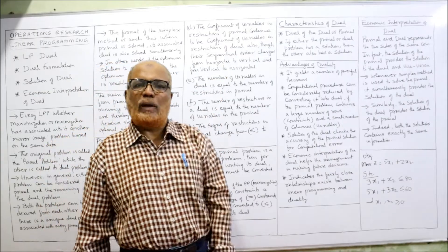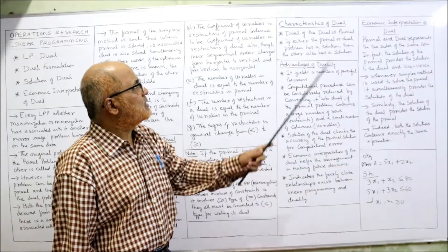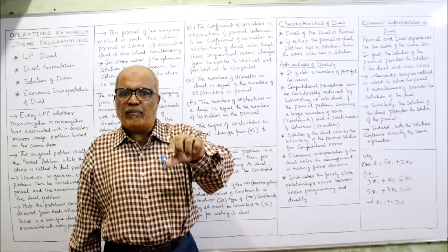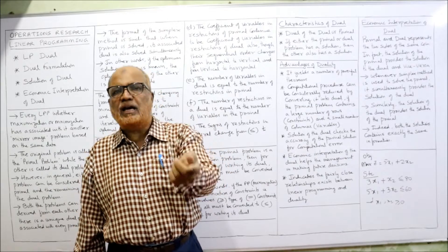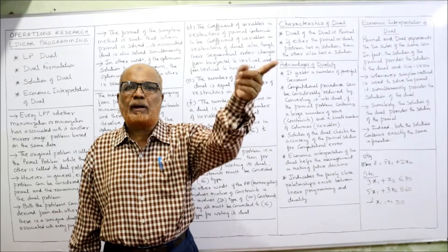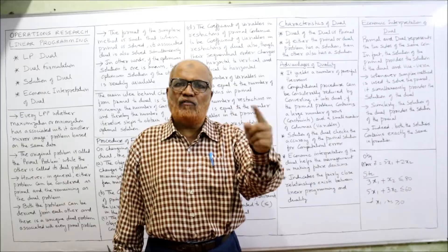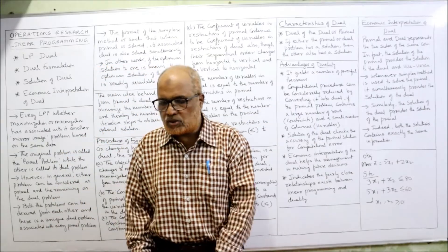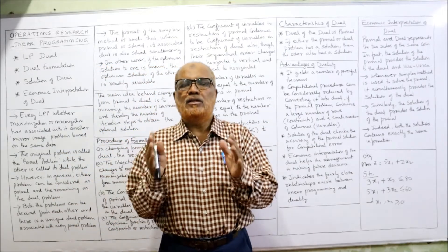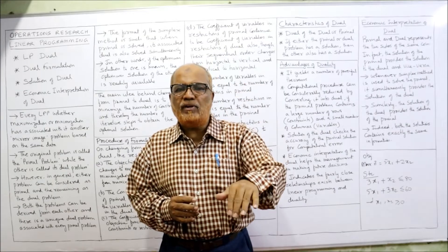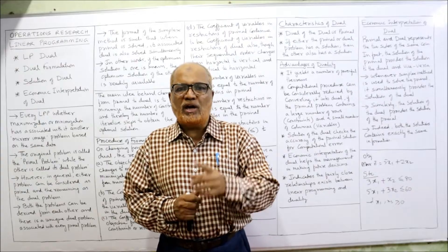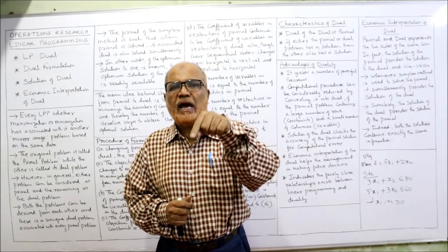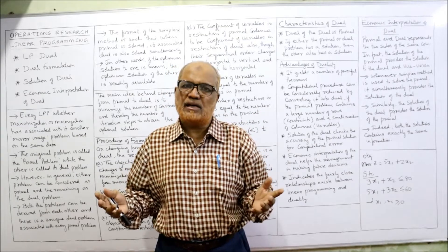Now the characteristics of dual. First: the dual of a dual is the primal. If we convert the primal into dual and then again calculate the dual of that dual, we will get back the primal problem. Second: if either the primal or dual problem has a solution, the other also has a solution. If we get the solution of the primal, we can automatically get the solution of the dual, and vice versa.